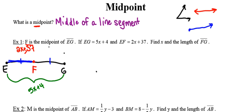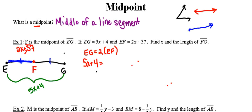The distance from E to G, the length of the whole thing, is going to be worth two of the distances between E and F. So when I go to write an equation, I need to write an equation that says the distance between points E and G is double or twice as much as the distance between points E and F. The distance between E and G is 5X plus 4, and the distance between E and F is 2X plus 37, but I want two of those — so two times the quantity 2X plus 37.